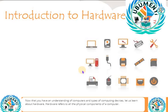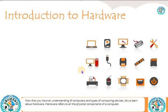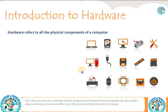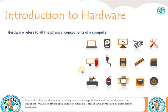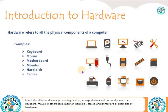Now that you have an understanding of computers and types of computing devices, let us learn about hardware. Hardware refers to all the physical components of a computer. It includes all input devices, processing devices, storage devices, and output devices. The keyboard, mouse, motherboard, monitor, hard disk, cables, and printer are all examples of hardware.